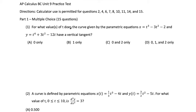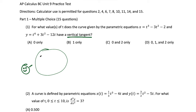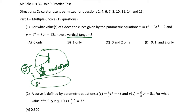Question 1: we want to know for what values of t does the curve given by the parametric equations have a vertical tangent. When you hear vertical tangent, you should be thinking about where is the slope of the tangent line undefined — where is dy/dx undefined? We're going to have our derivative expressed as a fraction, and we're going to set the denominator of that fraction equal to zero.